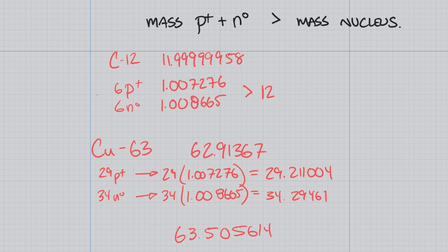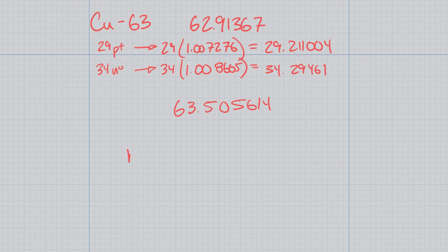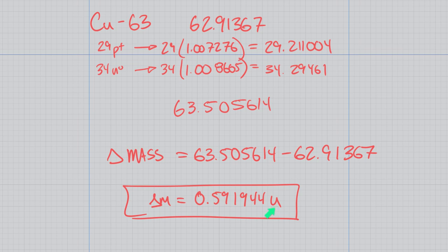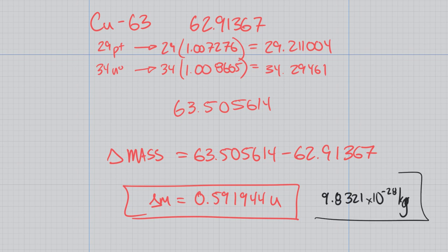We can find the mass defect by taking the difference: 63.505614 minus 62.91367, which is why we need all those significant figures. That gives us a mass defect of 0.591944 U for copper-63. In kilograms, that value is 9.8321 times 10 to the negative 28 kilograms — a very small amount of mass difference, but there is a difference.